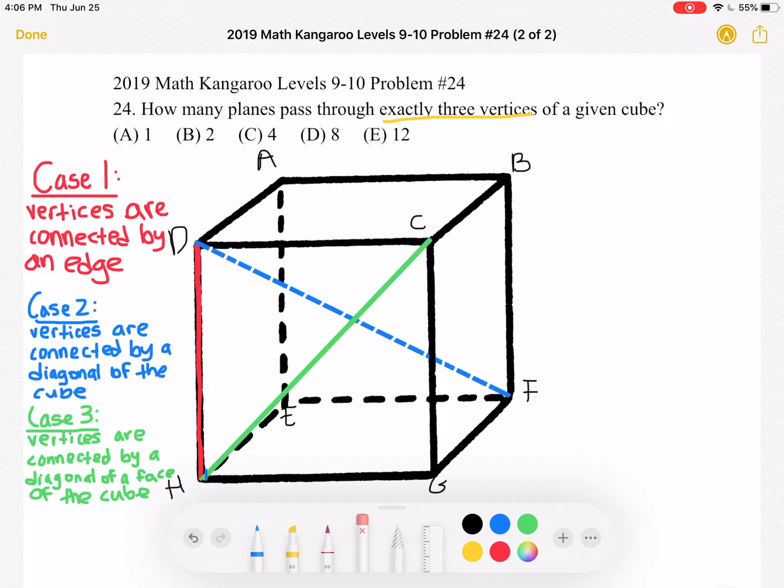Let's look at our third case. The diagonal of a face which in this case as an example is h, c. We have two points chosen and we need to choose a third.